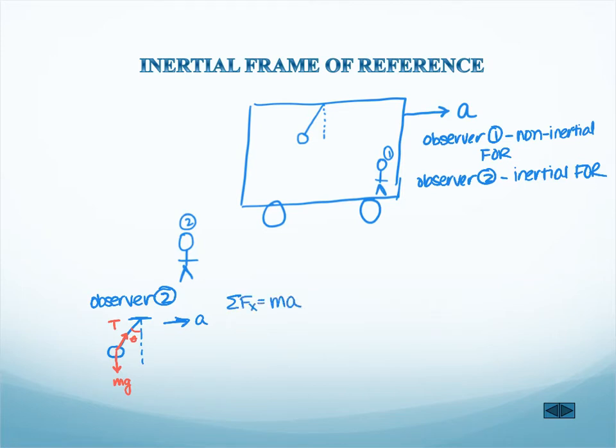And so if I look at my forces, my forces in my x direction, I'm going to have to set equal to mass times acceleration, because that mass on a string is accelerating along with the train car. And it's obvious to me that that's happening, because as an outside observer, I can observe the acceleration. And so what I find is the only x force I have is T times the sine of theta equals the mass times acceleration.